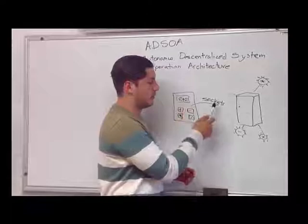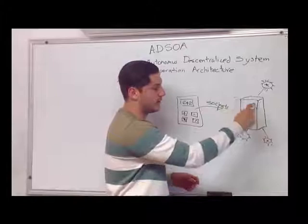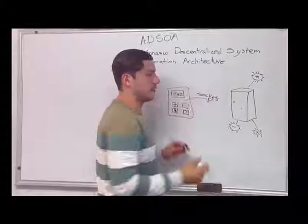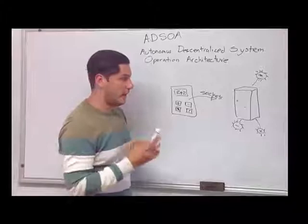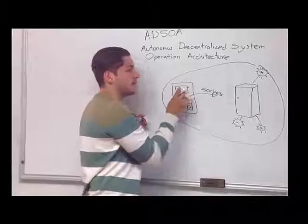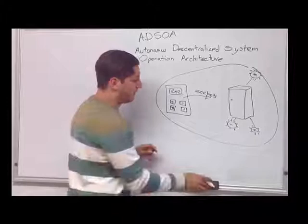So we operate the 2 plus 2, and this calculator sends information via sockets to this part of the system. We must emphasize the fact that this is an entire system — all of this. But we have some part of the system inside the server, and another part of the system inside your computer, because it's decentralized.